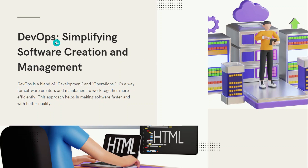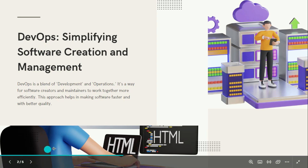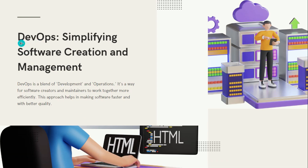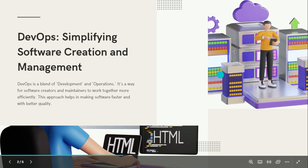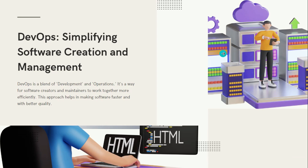Let's first try to understand what is DevOps. DevOps includes two terms: one is development and the other is operations. As part of development, the developer will write the code — for example in AEM, you will write the HTML code, JavaScript, and all that. Then there is operations, which involves installing AEM on a particular server and deploying all this code onto that server.